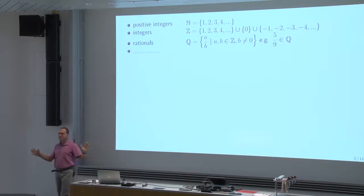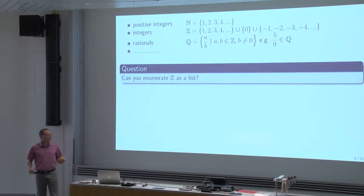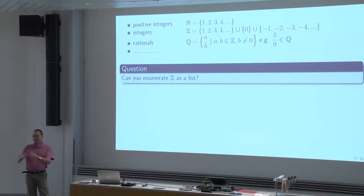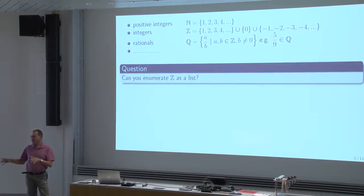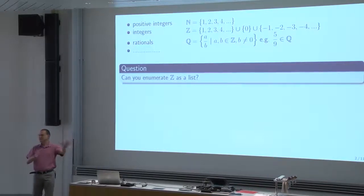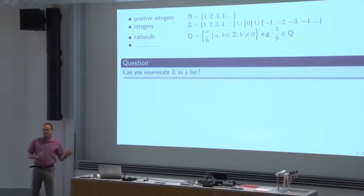There are other numbers that we'll get to, but let's look at these more closely. Can you enumerate the integers as a list? By this I mean: can you design a way to produce an integer every day, put it in a box, so that every integer at some point will appear in this box? Can you write an infinite list with the first element, second element, third element, fourth element, and so on, that contains all the integers?